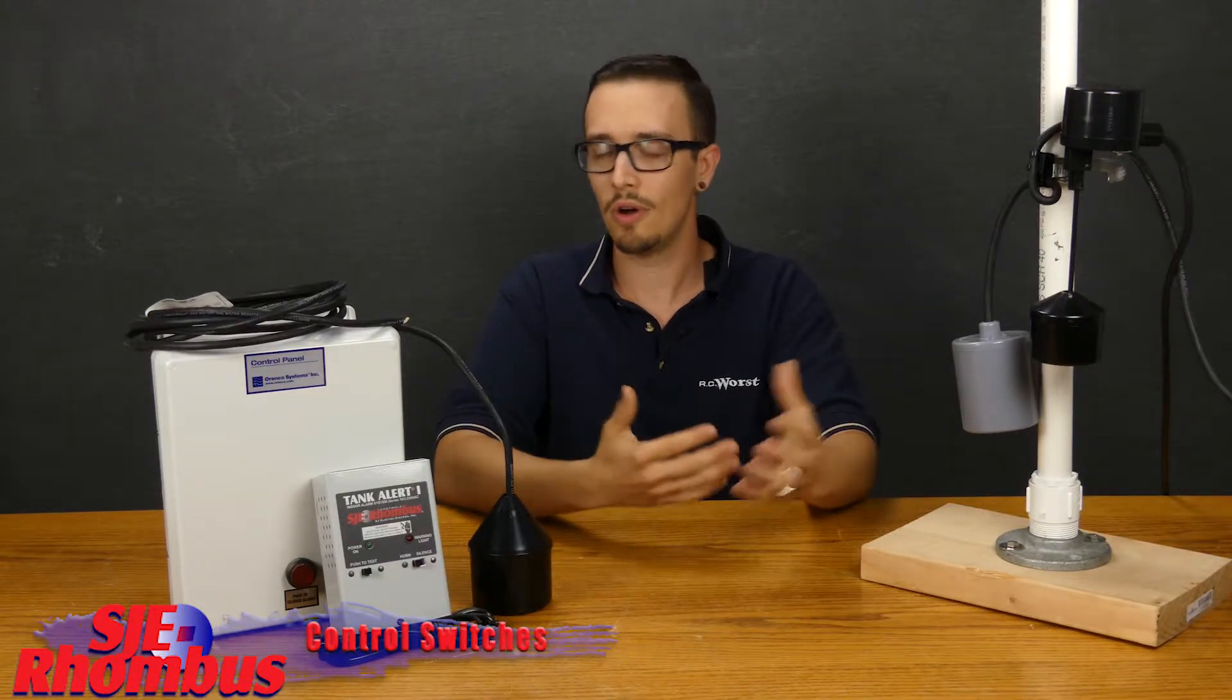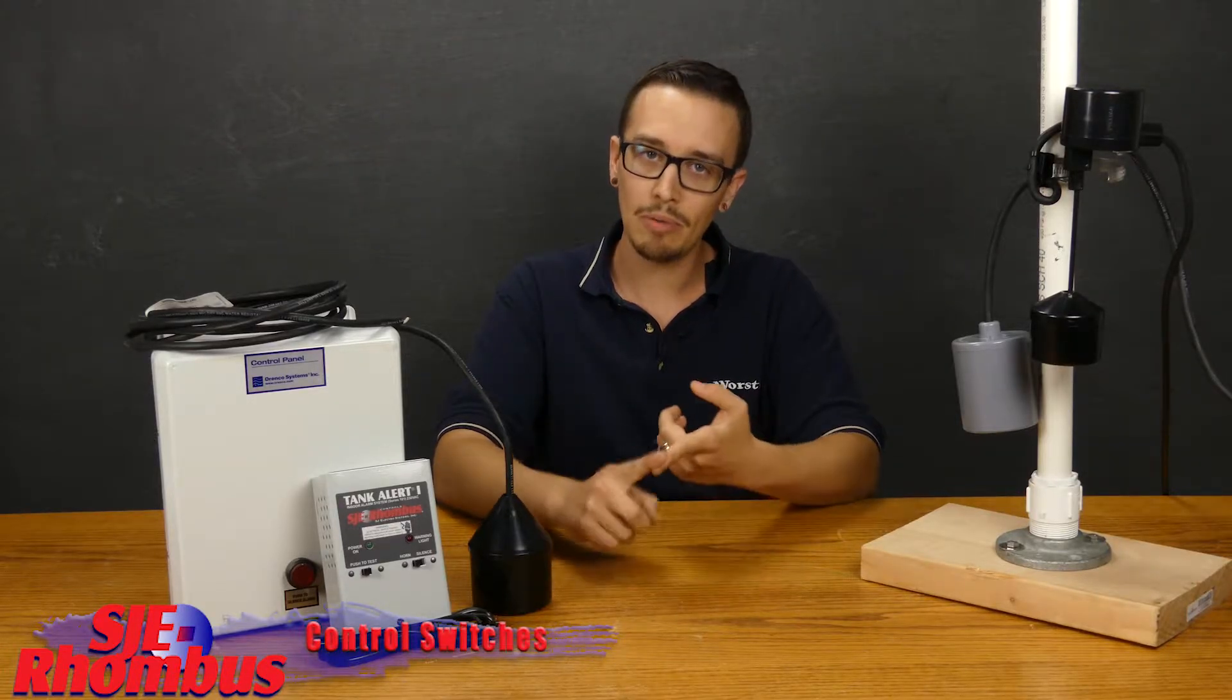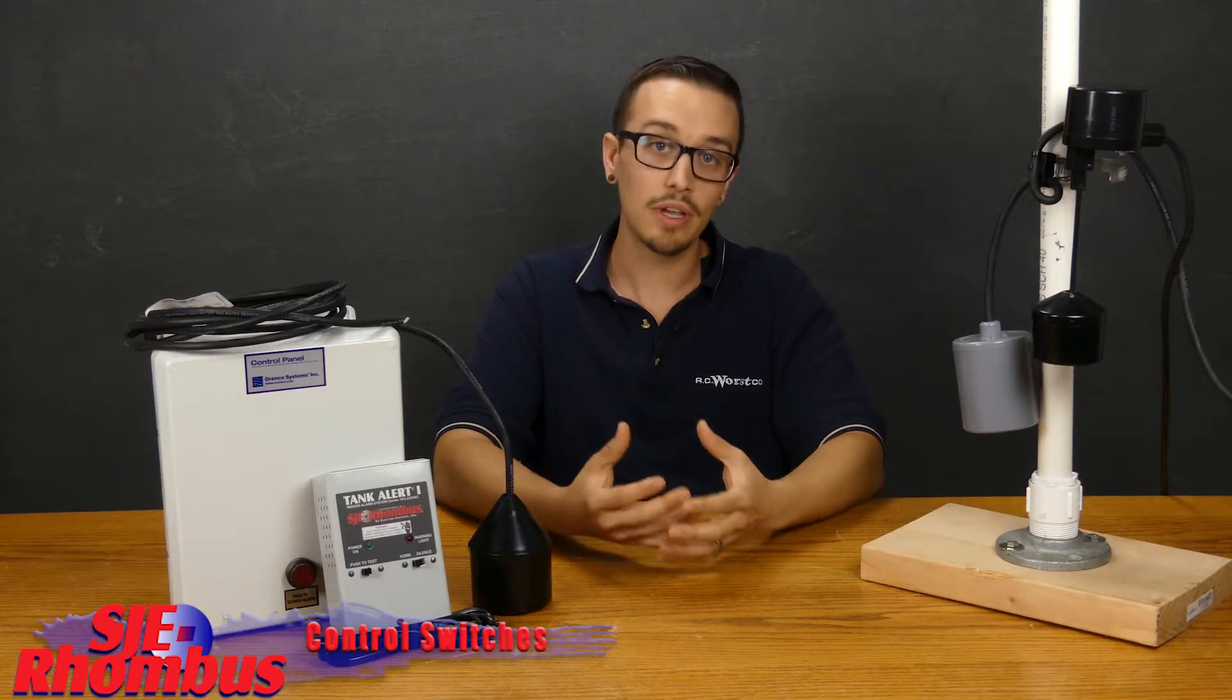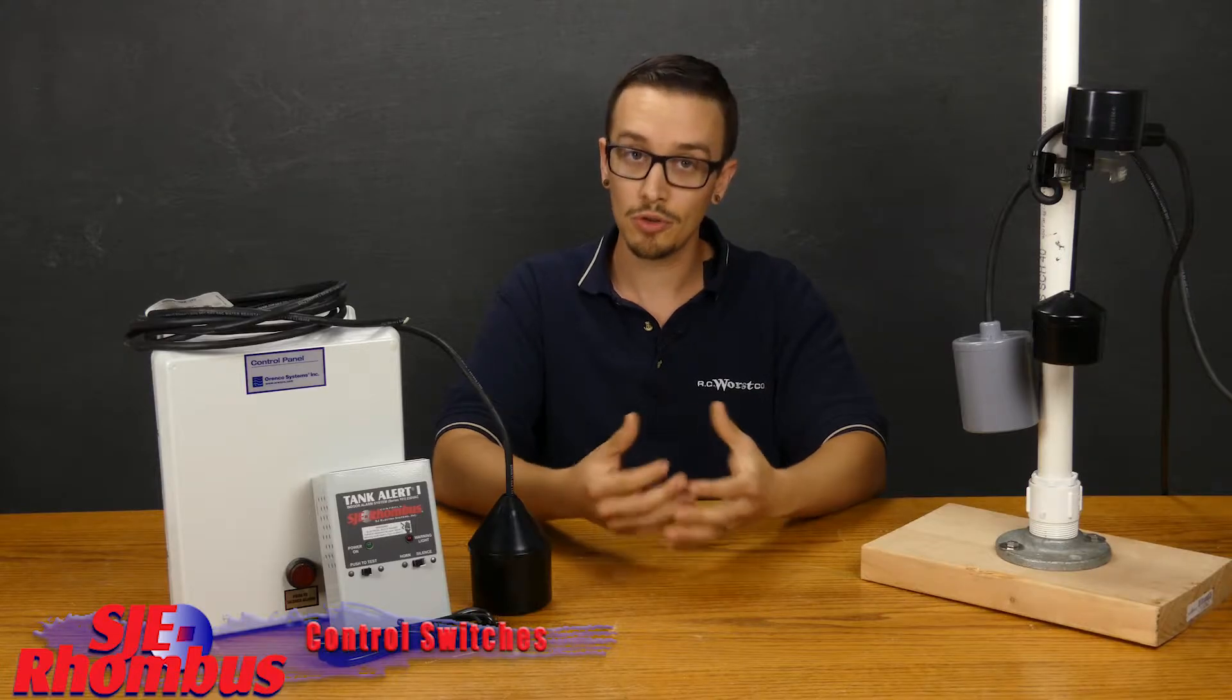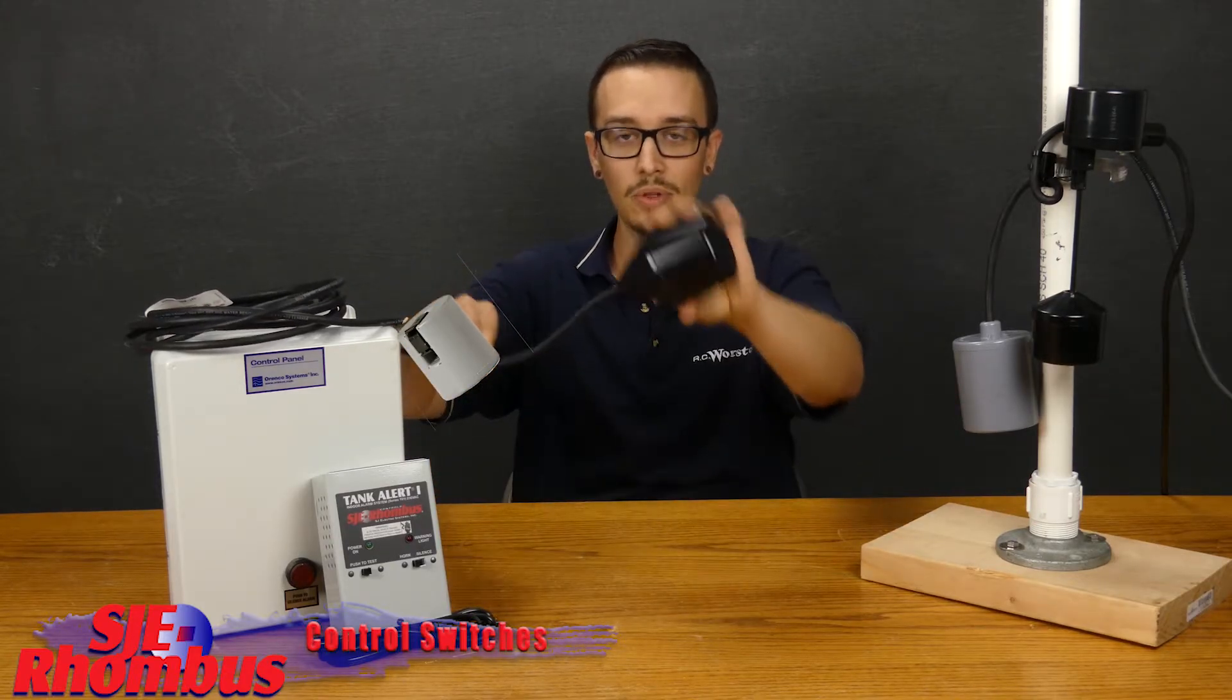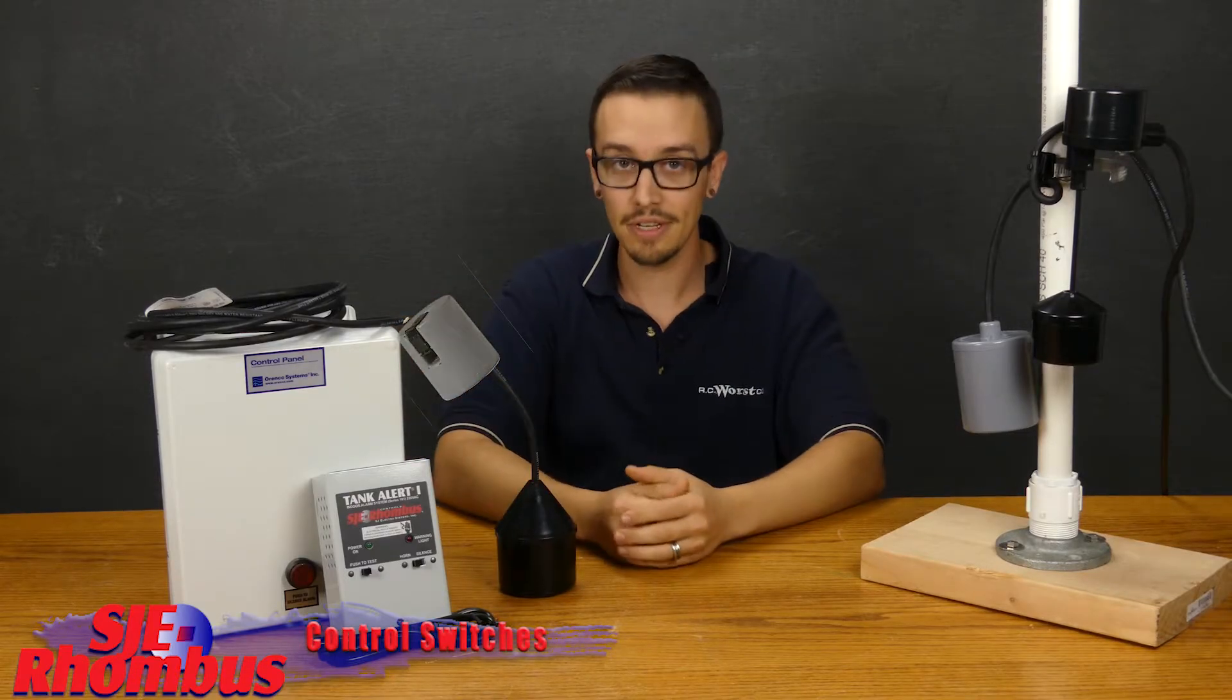These switches are all offered in various mounting configurations, so you can get them with a pipe clamp, which is going to be something similar to what we've got over here where you're able to attach the float switches to the pipe itself, or you can get them with no mounting option, or you can get them with an external weight which is just a small weight that creates a pivot point as the switch hangs down in the tank, and then the float switch will pivot from wherever that weight is attached inside the tank.